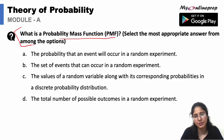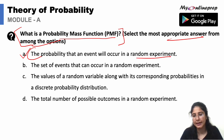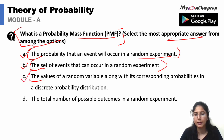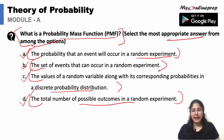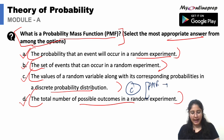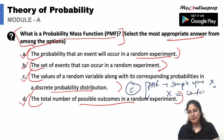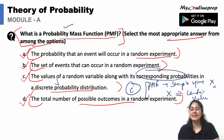What is a probability mass function? Select the most appropriate answer. The correct answer is option C: the values of a random variable along with its corresponding probabilities in a discrete probability distribution. The probability mass function tells us the sample space for a discrete variable x, giving the probability that x equals a certain value. This is why the PMF is important — it corresponds to probability under the discrete probability distribution.